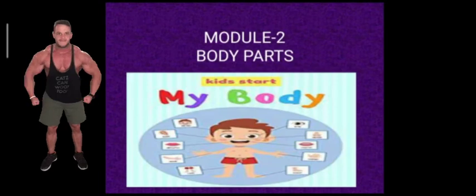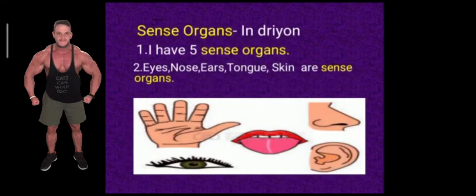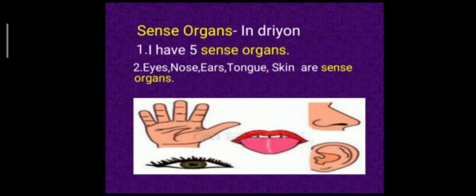Module 2 is body parts. The first word is sense organs. The sentence using the word is: I have five sense organs.